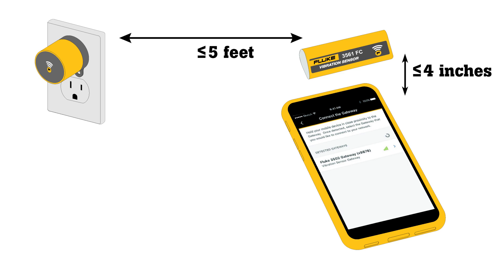With an active gateway, you can now connect your sensors. Stand within 5 feet of the gateway and hold your smart device within 4 inches of the sensors. You can choose to activate one or all four sensors.